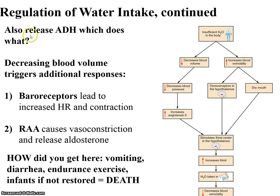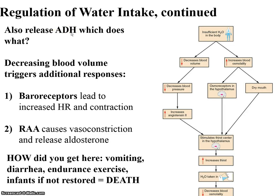We also release antidiuretic hormone, which we've covered a lot in this course. Antidiuretic hormone targets the collecting ducts in the kidneys and causes them to insert water channels so that more water is reabsorbed. Because you have increased concentration — if you add water to it, you're diluting it. Decreasing blood volume triggers additional responses as well.